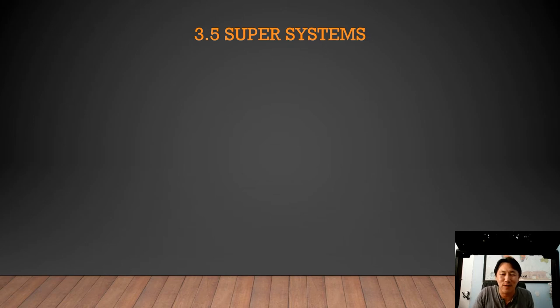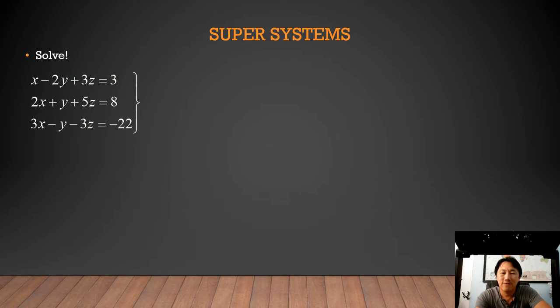Listening to our favorite song, 3.5 super systems. This is my favorite thing to do in algebra - solve systems. Now we're going to solve super systems. Basically we have three equations and three unknowns: an X, a Y, and now a Z. These are kind of fun to solve. If you notice, all the X's are lined up, all the Y's are lined up, all the Z's are lined up, and all the equal signs are lined up.